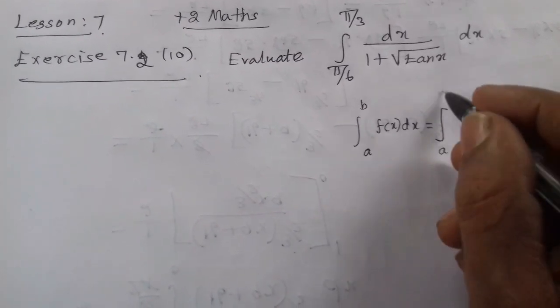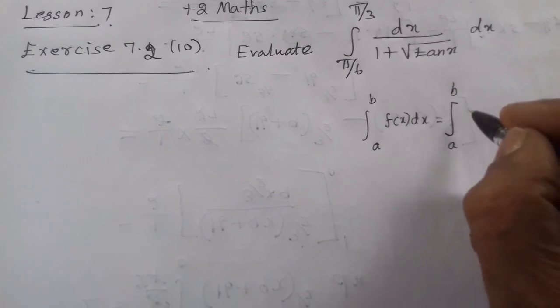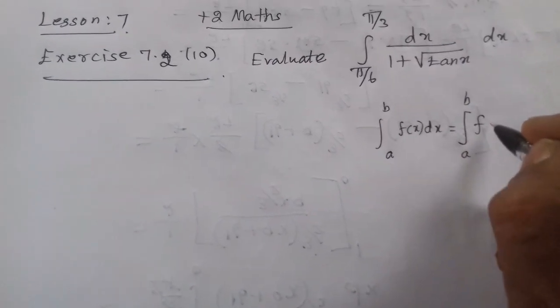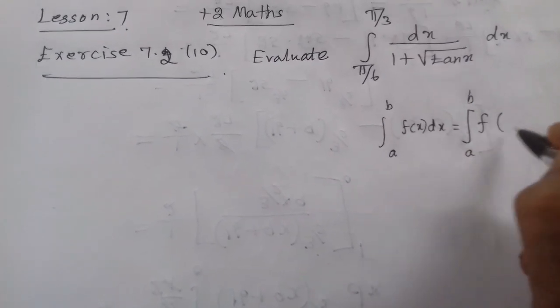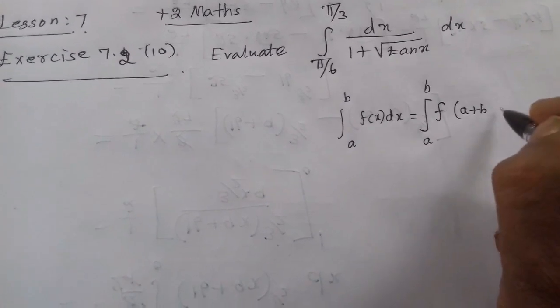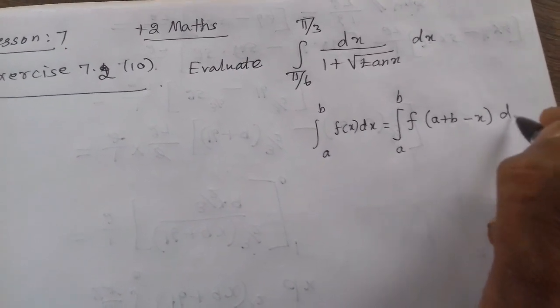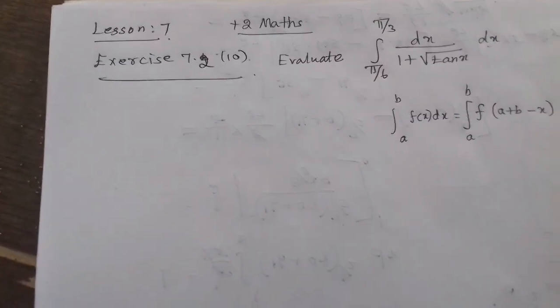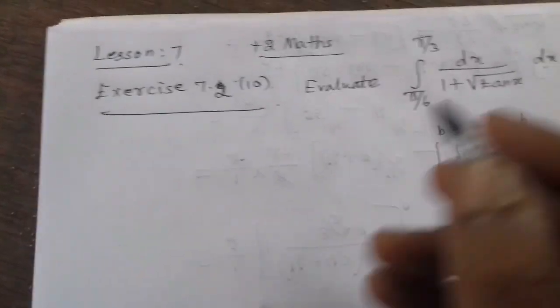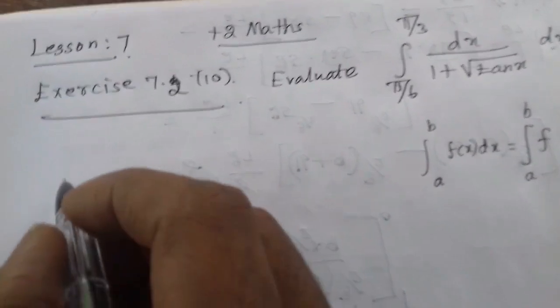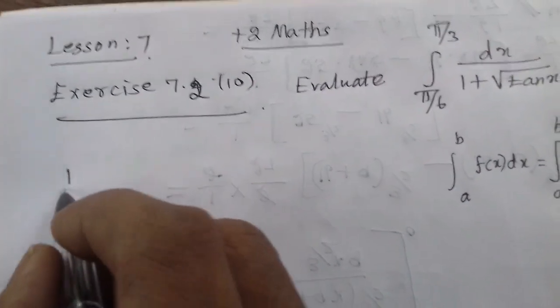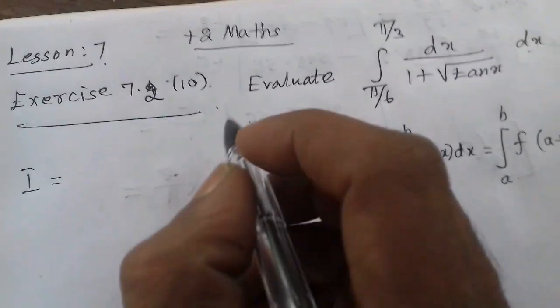A to b, and a plus b, function of - add a value minus x into dx. This is a property. So first, let's press I to get a problem.